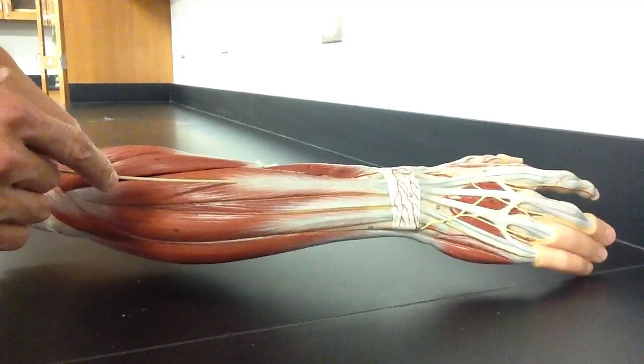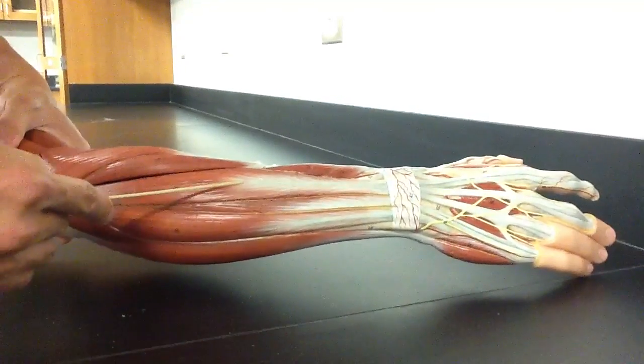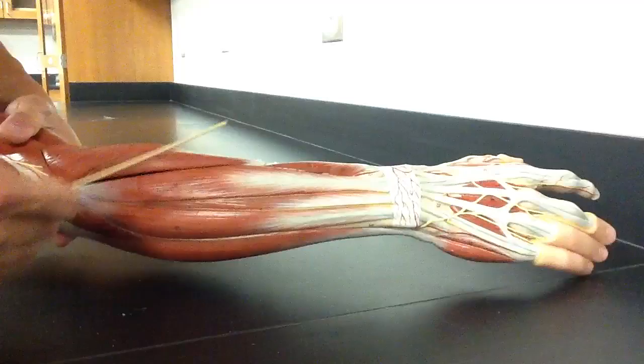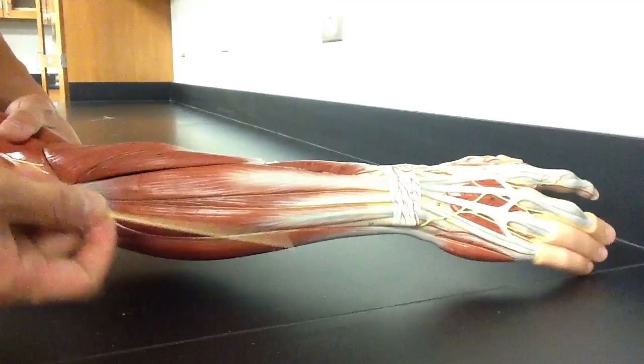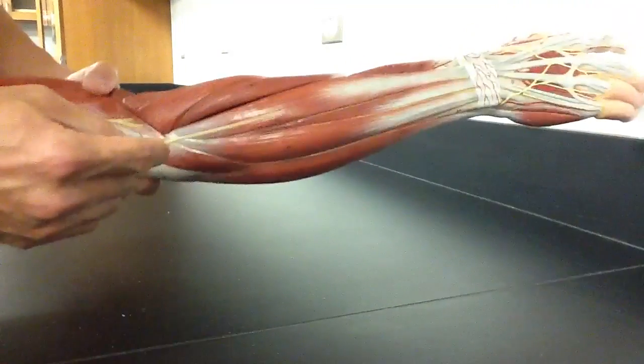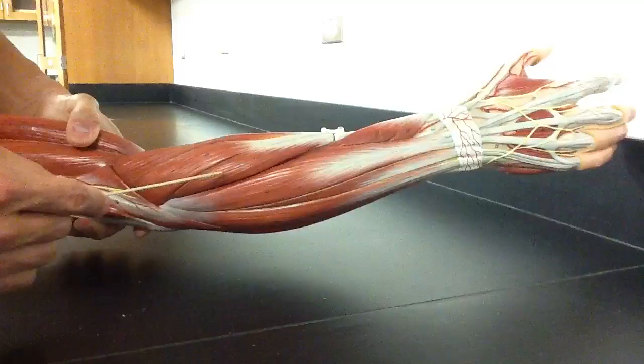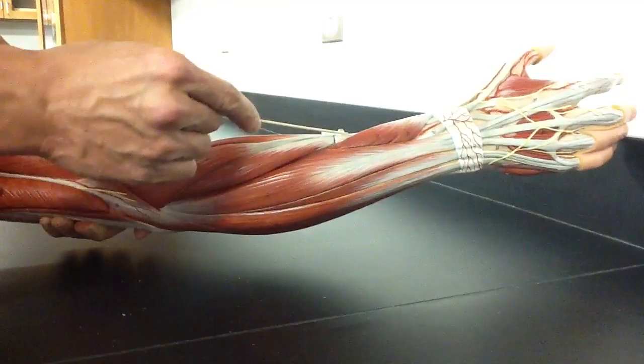Once we see the extensor digitorum, there is the extensor digitorum longus, but that's in the leg. So we're just going to keep with extensor digitorum. That's how you delineate it. We continue on with all our muscle bellies here.